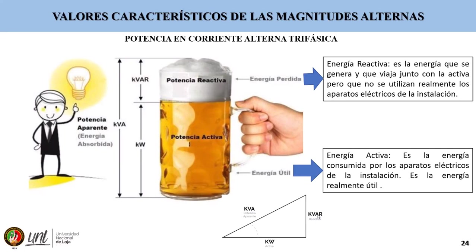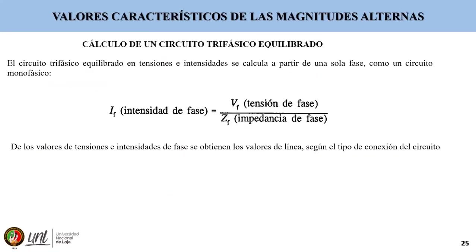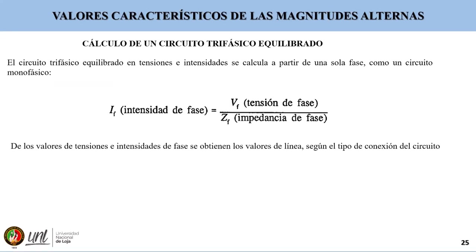Para concluir, el cálculo de un circuito trifásico equilibrado: el circuito trifásico equilibrado en tensiones e intensidades se calcula a partir de una sola fase como un circuito monofásico, donde la intensidad de fase es igual al voltaje de fase o tensión de fase entre la impedancia de fase. De los valores de tensiones e intensidades de fase se obtienen los valores de línea según el tipo de conexión del circuito.